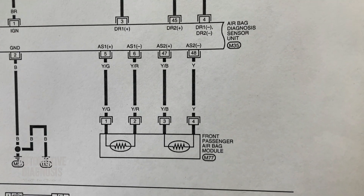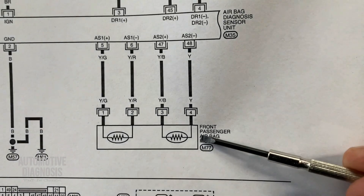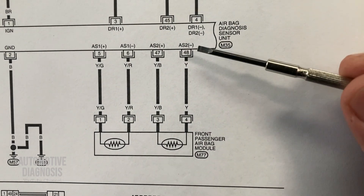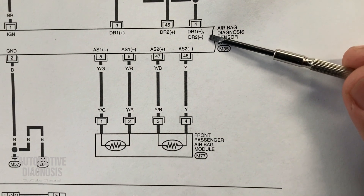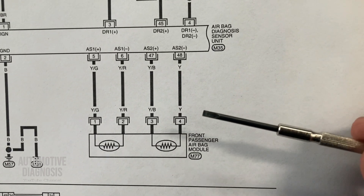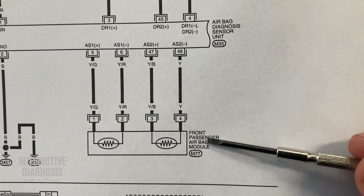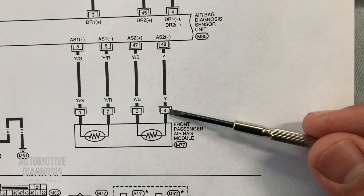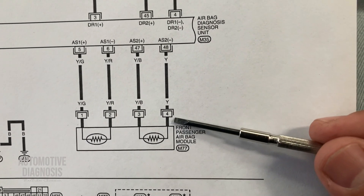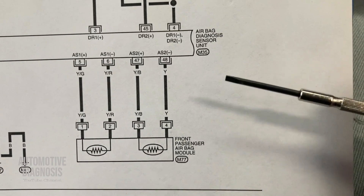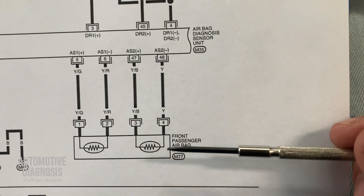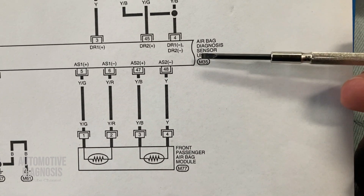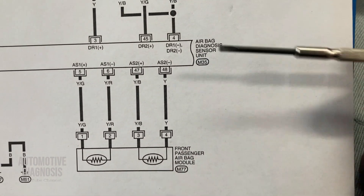When you have a fault code on the airbag, the problem could be from the airbag itself, the wiring between the airbag and airbag control module, or the airbag control module itself. The step-by-step diagnostic is: first, locate the airbag and check the connector because the code was open circuit. If the connector is okay, proceed to check the airbag and wiring. If those are okay, you may need to replace the airbag control module.